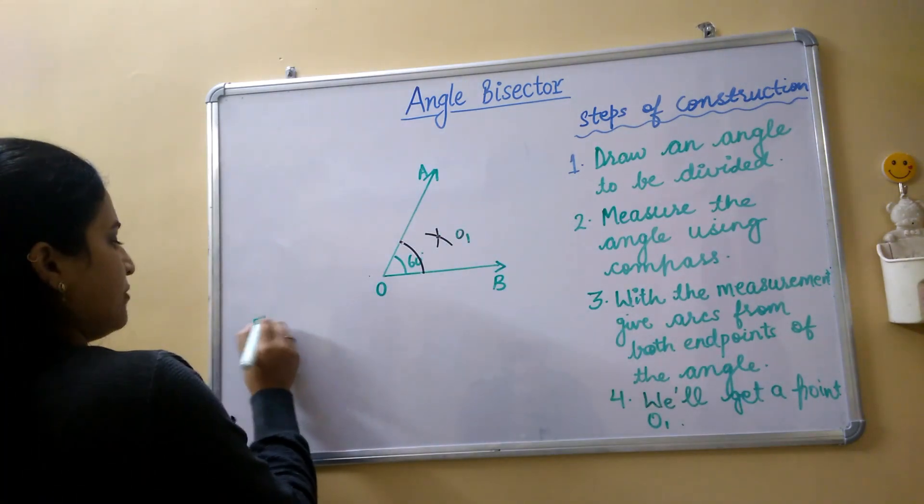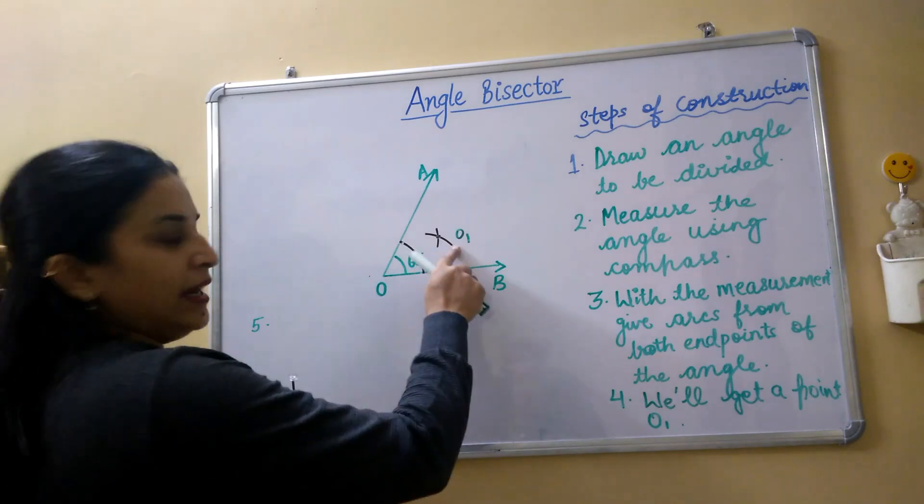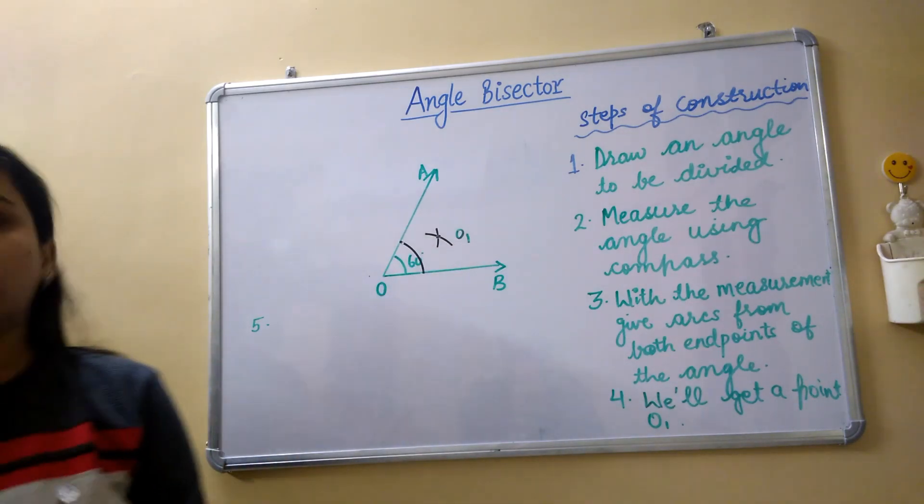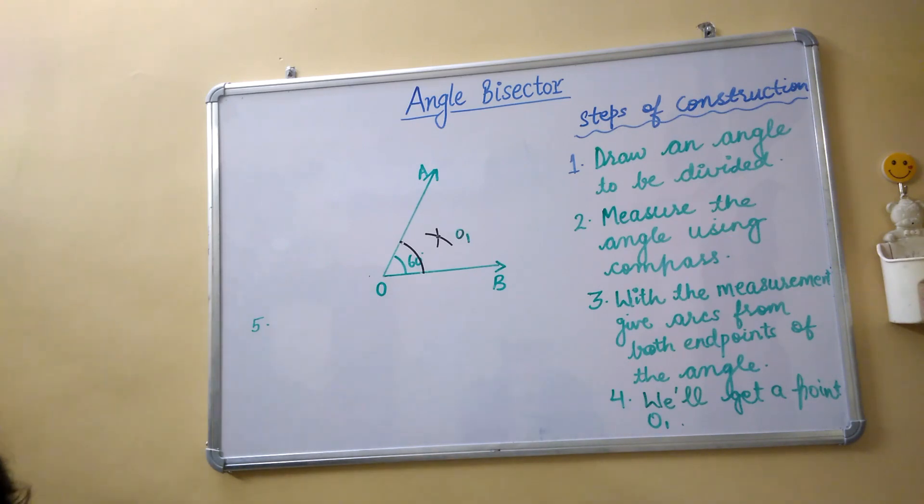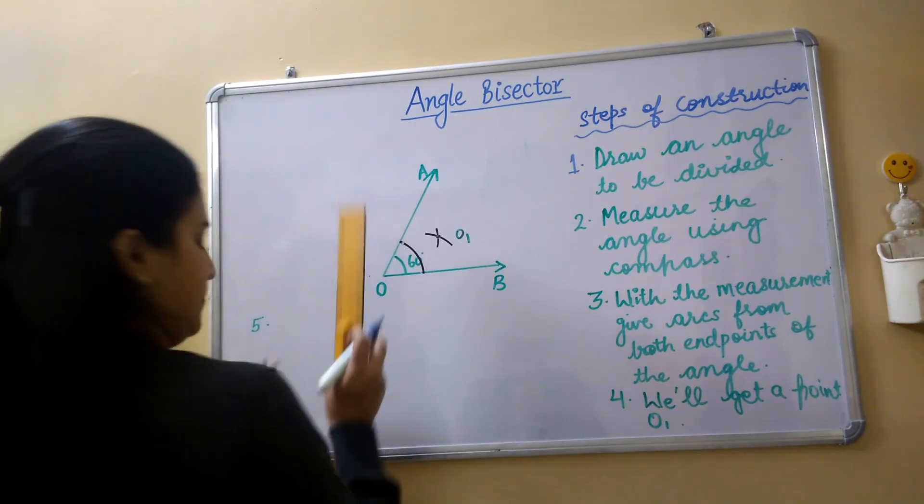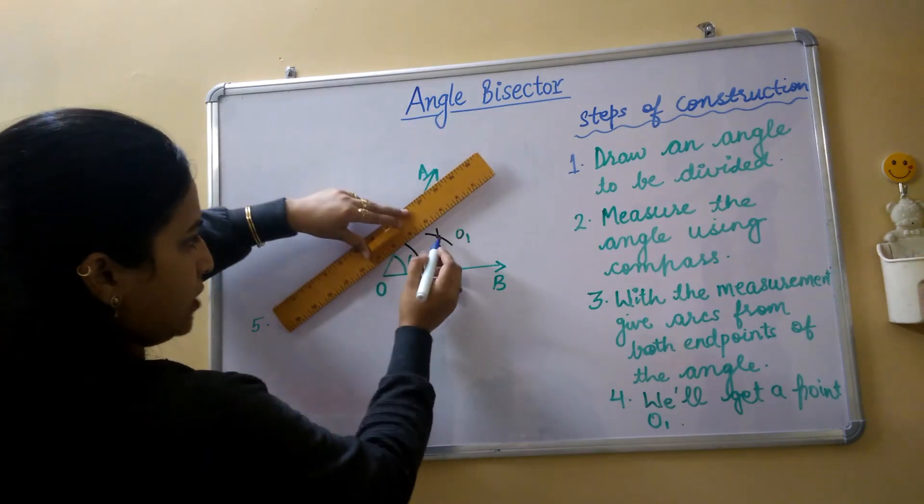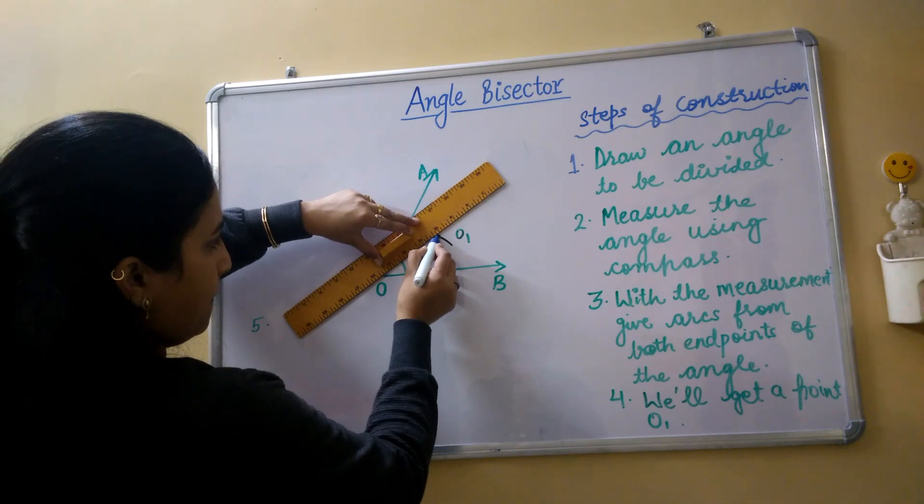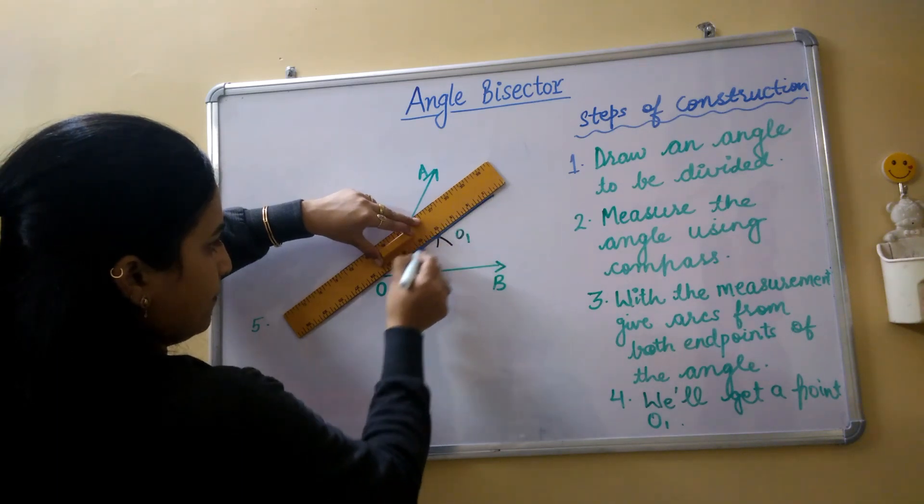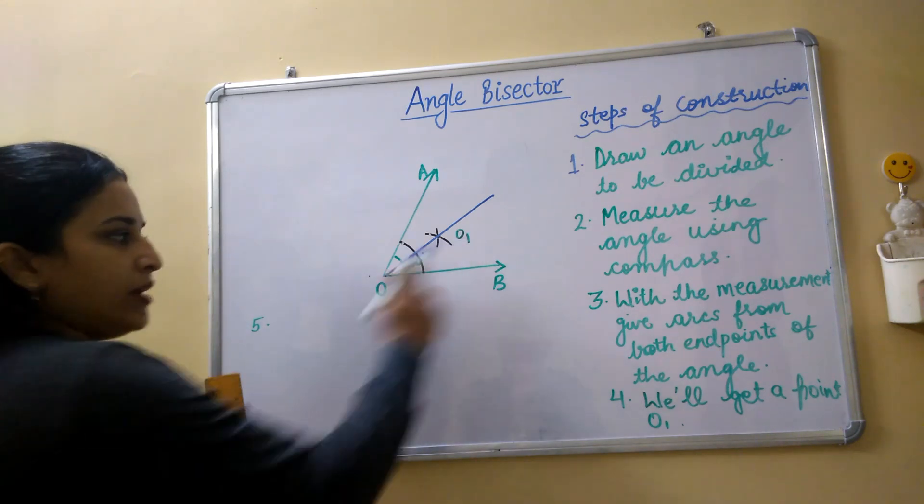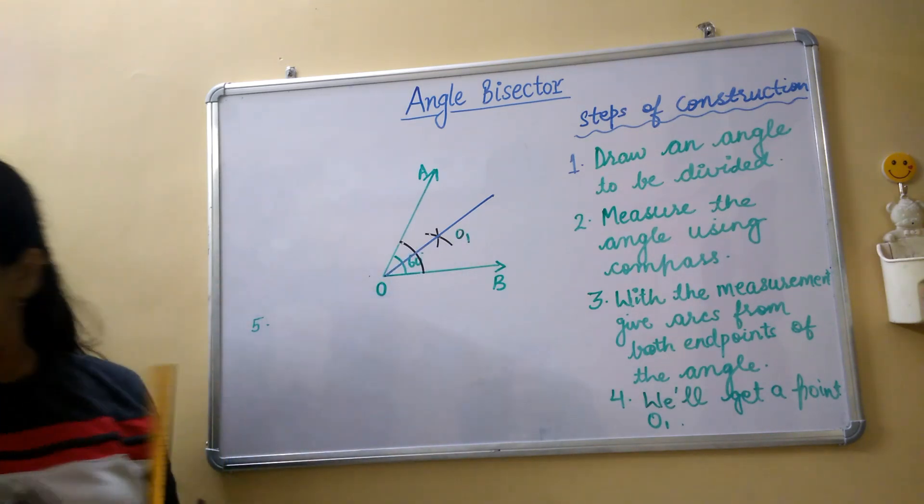Fifth point will be, first of all O1, we will get the point O1 and we will join the points. We will join the points O and O1. So here I am joining the points O and O1. Here I have joined the points O1 and O.